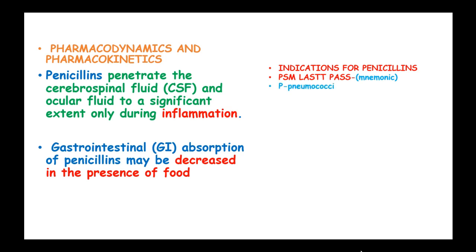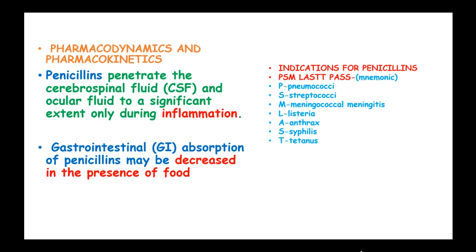Indications for penicillin can be mastered using this mnemonic: Pneumococcal infections, Streptococcal infections, Meningococcal meningitis, Listeria, Anthrax, Syphilis, Tetanus, Trench Fever, and Pasteurella multocida.